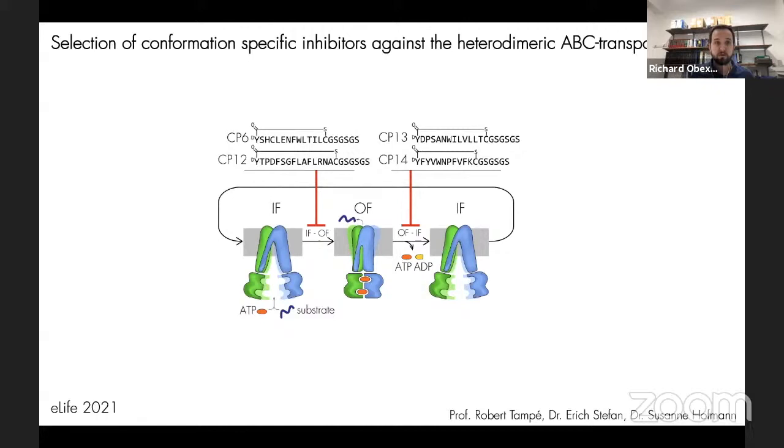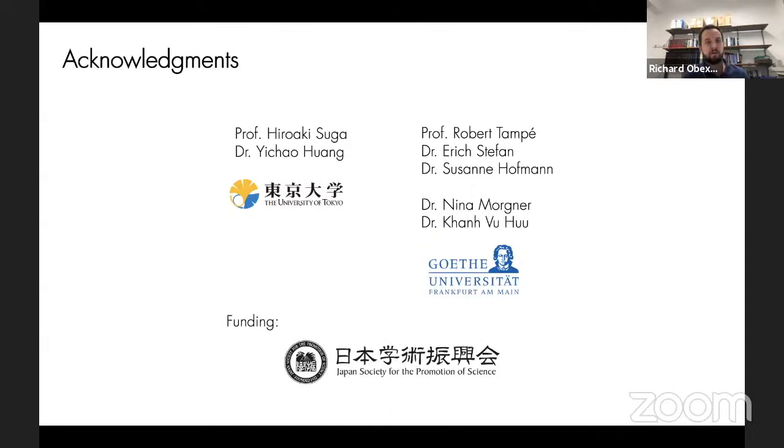In conclusion, one can see that using selection techniques, one can find diverse peptides that can show many different modes of inhibition, but the important thing in performing selections is the correct preparation of the target protein. With this, I'd like to first of all thank my postdoc supervisor Hiro Suga from the University of Tokyo for giving me the chance and opportunity to work in his lab on this project. I'd also like to thank Professor Robert Tampe, Dr. Eric Staffan, Dr. Susanne Hoffman, as well as Dr. Nina Morgner and Dr. Khan Buhu from the Goethe University with whom I collaborated on this project. In addition, I'd like to thank the Japanese society for the promotion of science for postdoctoral funding. Thank you for your attention.